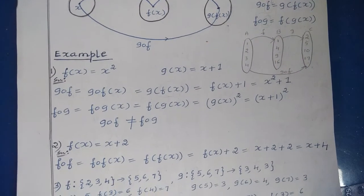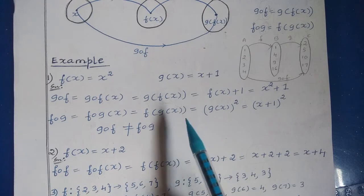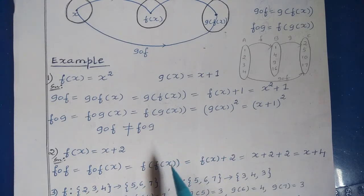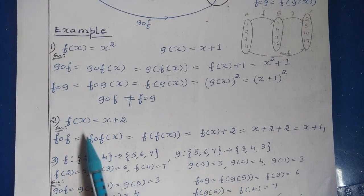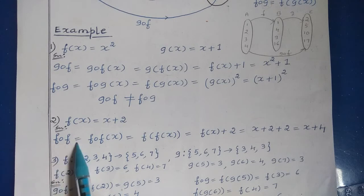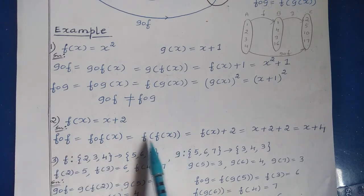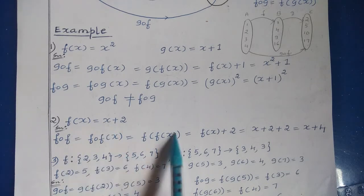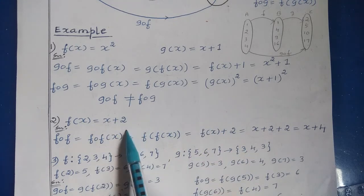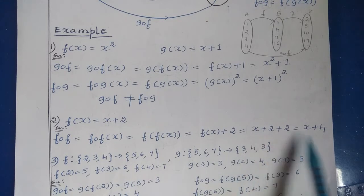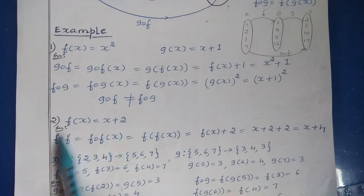Next, let us see another example. It is also possible to compose a single function with itself. For f(x) = x + 2, the composition fof(x) = f(f(x)). Replacing x with f(x) inside f gives f(x) + 2 = (x + 2) + 2 = x + 4. So you can perform the composition of a function with itself.